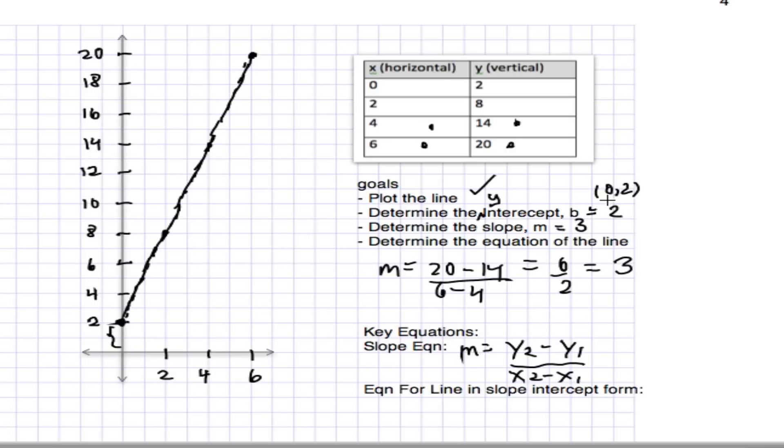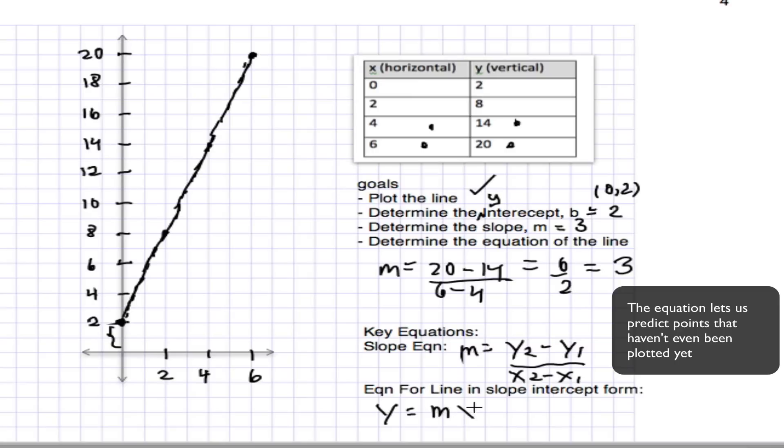Now, to get the equation for this line, we review our algebra 1. The equation for line in slope intercept form is given by y equals mx plus b. Where m is the slope and b is the y-intercept.